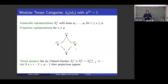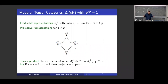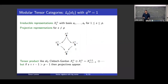For SL2 at a 2p-th root of unity, you have certain irreducibles — basically like irreducibles from a Lie algebra but only up to dimension p. Then you have projective objects that look like a diamond: a sub-module, two quotient modules, and another at the top. The tensor product looks like the Lie algebra rule, but as soon as the sum of your weights becomes larger than p, instead of simples you get projectives. This is very close to Lie algebra in characteristic p, which is where Lusztig's intuition comes from.